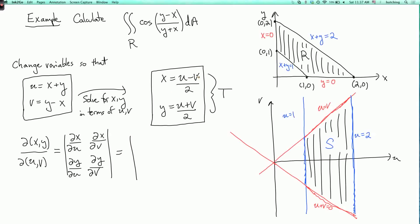So dx/du, well, x is u over 2 minus v over 2, so that's a half. And dx/dv is minus a half. And dy/du is a half, and dy/dv is also a half.